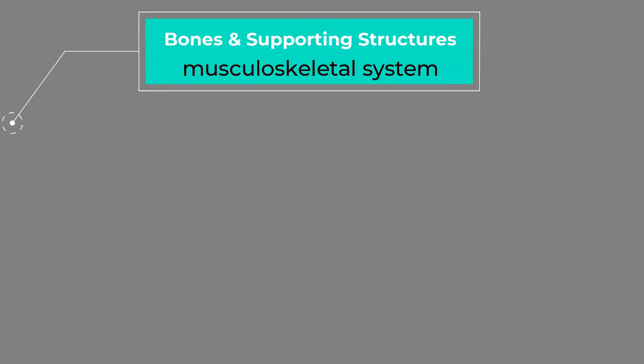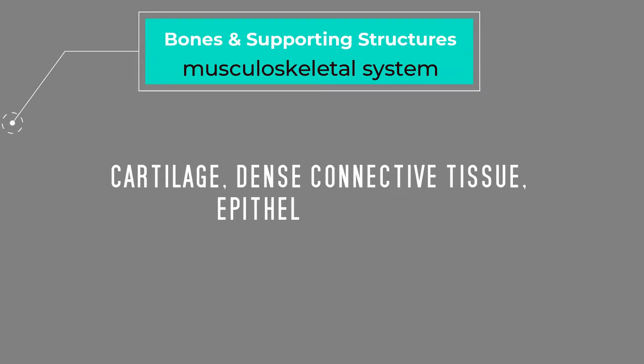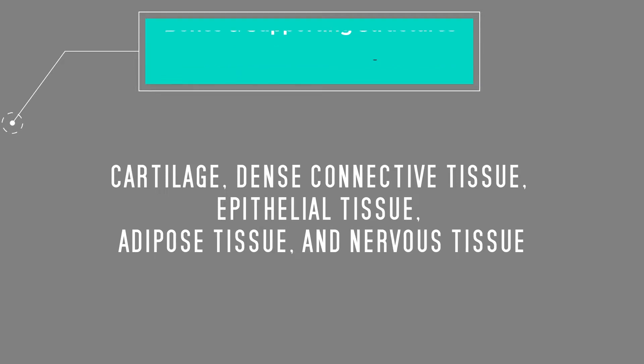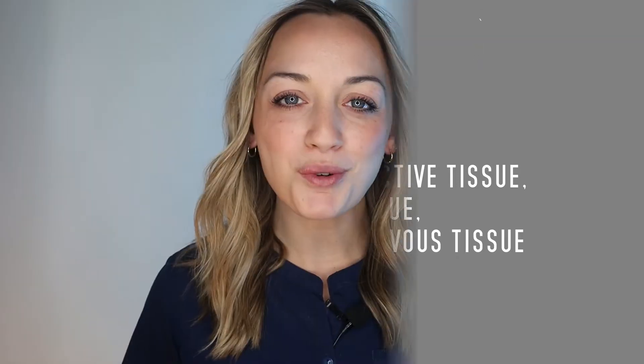Bones are made up of several different types of tissue. You will find cartilage, dense connective tissue, epithelial tissue, adipose tissue, and nervous tissue. But the two primary types of bone tissue are compact bone and cancellous bone.